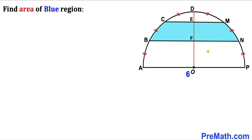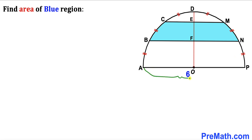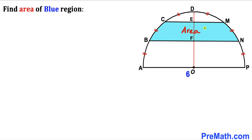Welcome to Premath. In this video we have a semicircle with center O, along with chords C, M and BN as shown in the diagram, which creates a blue shaded region. These arc lengths are equally divided into six parts, and the diameter AP of this semicircle is six units. Our task is to calculate the area of this blue shaded region.